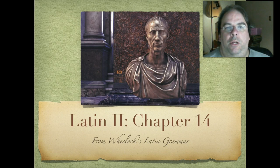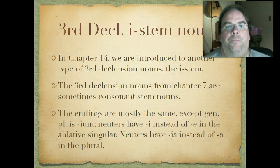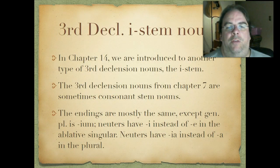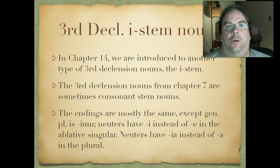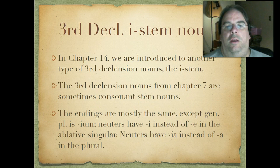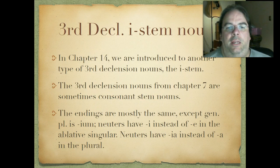We're going to be introduced to a new type of third declension nouns called the I-stem. Third declension nouns we've seen before, like the ones from chapter 7, from here on out we'll call those consonant-stem nouns. The good news is the I-stems look almost identical, except the genitive plural ends in I-U-M. Neuters have I instead of E in the ablative singular, and they also have I-A instead of just A in the nominative, accusative, and vocative plural.